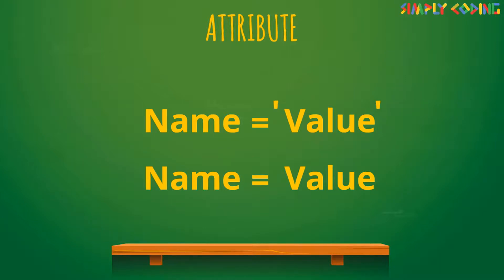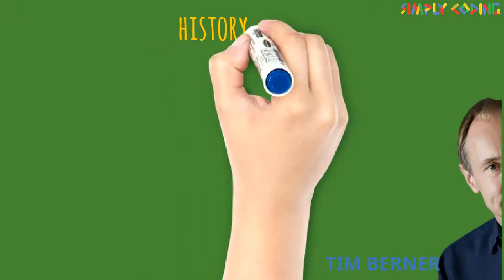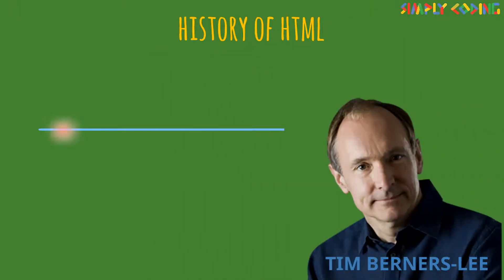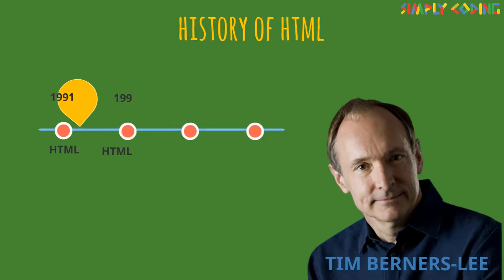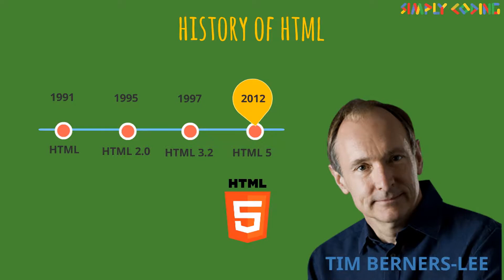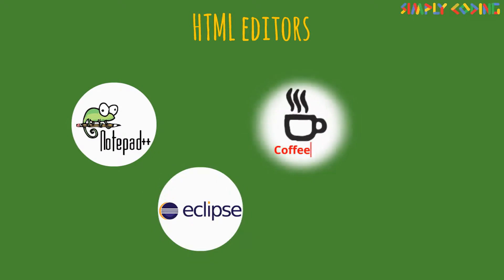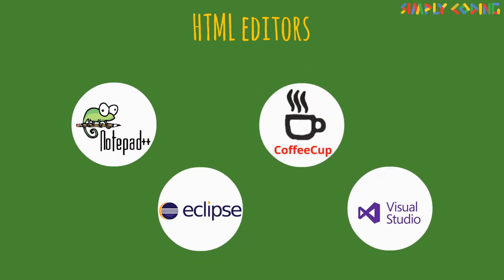Let's look at the history of HTML. Tim Berners-Lee proposed HTML, and its first formal version was released around 1991. It went through various revisions, and now HTML version 5 is being used. In this course, we will study some features of earlier versions as well, as they are still supported by current browsers. Some common HTML editors are Notepad or Notepad++, Eclipse, CoffeeCup, or Visual Studio.